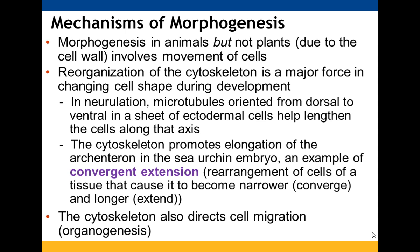Unlike plants, animal cells do move during morphogenesis because they lack a cell wall. Cytoskeleton reorganization plays a big role in changing cell shape throughout development. During neurulation, microtubules oriented dorsal-to-ventral help to lengthen cells along the sheet of ectodermal cells. The cytoskeleton also promotes archenteron elongation — an example of convergent extension, where cells making up a tissue become narrower and longer. The cytoskeleton also plays a role in cell migration, which leads to organogenesis.